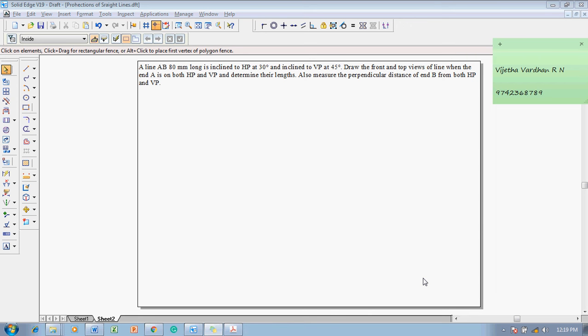Hi guys, greetings of the day. Myself Vijay Thavadhan and today I am going to show you one problem on straight lines in this lecture. The problem is like this: A line AB 80mm long is inclined to HP at 30 degrees and inclined to VP at 45 degrees. Draw the front and top views of the line when the end A is on both HP and VP and determine their lengths. Also measure the perpendicular distance of B from both HP and VP.